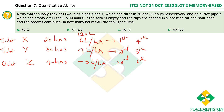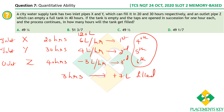In each 3-hour cycle: hour 1 fills +6 liters, hour 2 fills +4 liters, hour 3 empties −3 liters. Net fill per cycle = 6+4−3 = 7 liters every 3 hours. The tank capacity is 120 liters.